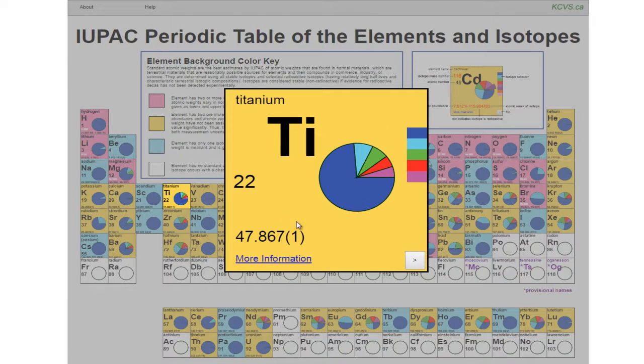The standard atomic weight is given as a single value with an uncertainty due to both measurement and isotopic abundance variations. This uncertainty is indicated in parentheses at the end of the value.